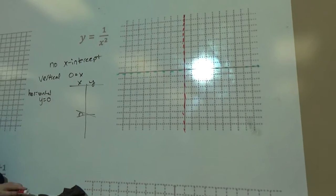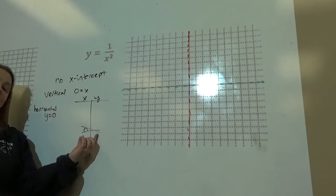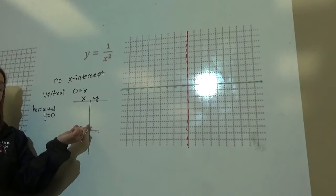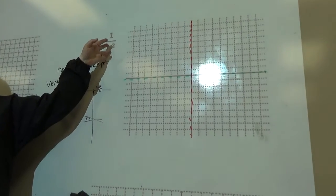Now we need to try some numbers to know what our graph is going to look like on each side. So you want to try some numbers bigger than zero and some numbers smaller than zero. And if I were you, I would put this into my calculator and find the table.